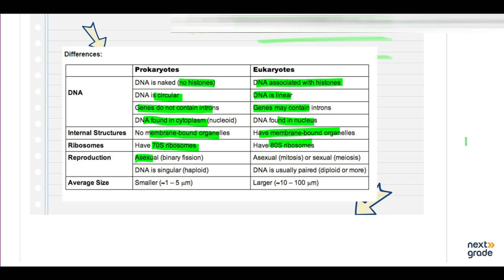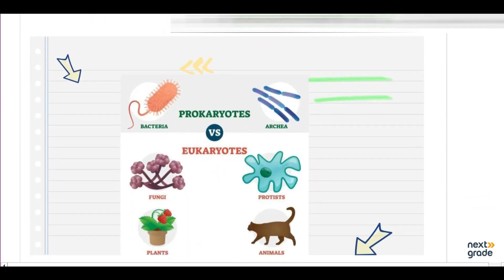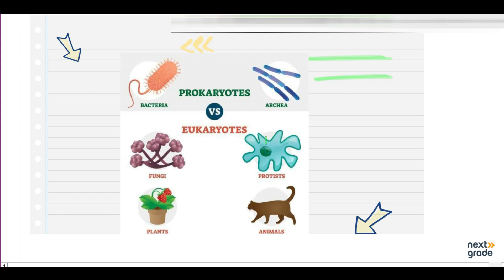Prokaryotes reproduce by binary fission, while eukaryotes reproduce by mitosis or meiosis. In prokaryotes the DNA is singular, while in eukaryotes it is paired and diploid — and can be more. Prokaryotes are 1 to 5 micrometers in size, while eukaryotes are larger, between 10 to 100 micrometers in diameter. Examples of eukaryotes include protists, fungi, plants, and animals, while examples of prokaryotes include bacteria and archaea, such as blue-green algae.